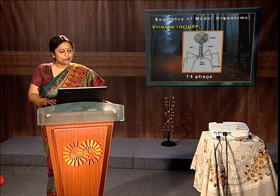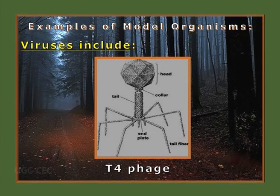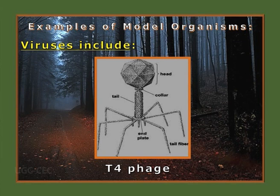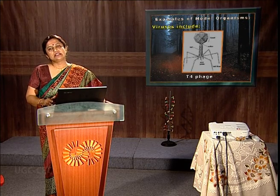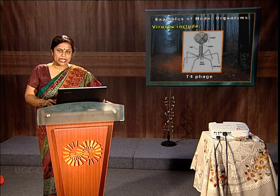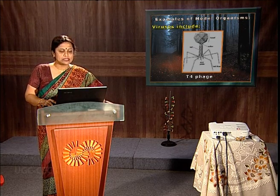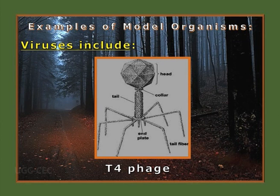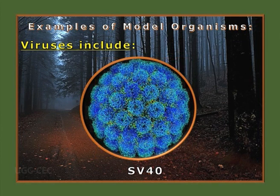The most important bacteriophage is T4. T4 phage has had maximum contributions: it helped us understand that DNA is supposed to be the genetic material. It also helped us understand fine structure mapping of genomes, the triplet codon concept, various DNA repair mechanisms, and the various recombination mechanisms existing inside any living system.